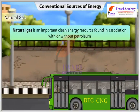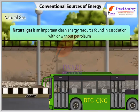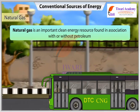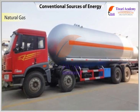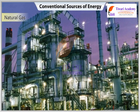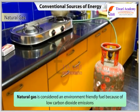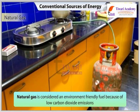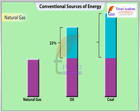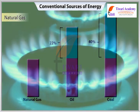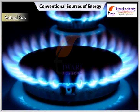Natural gas is an important clean energy resource found in association with or without petroleum. It is used as a source of energy as well as an industrial raw material in the petrochemical industry. Natural gas is considered an environment-friendly fuel because of low carbon dioxide emissions — it emits 22% less carbon dioxide than oil and 40% less than coal, making it the fuel for the present century.